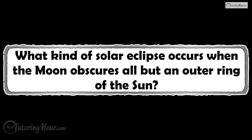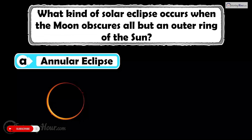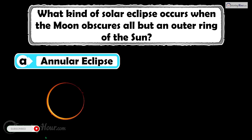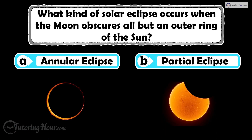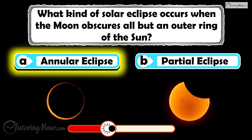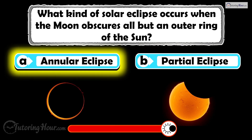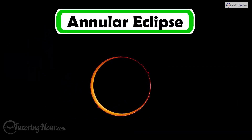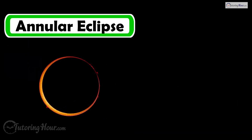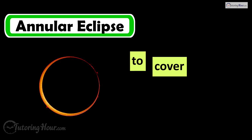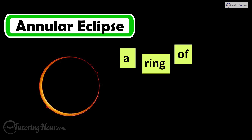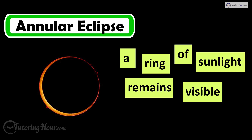What kind of solar eclipse occurs when the moon obscures all but an outer ring of the sun? Is it A, annular eclipse, or B, partial eclipse? The correct answer is annular. When the moon is too far from Earth to cover the sun completely, a ring of sunlight remains visible.